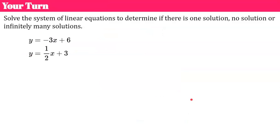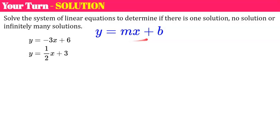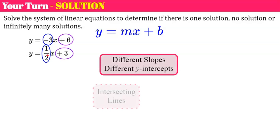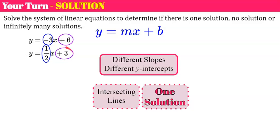Here's another one for you. Go ahead and pause, solve, and come back when you're ready. Welcome back. Both equations are in slope-intercept form. The slopes are different, so automatically we're going to have one solution. These ones also have different y-intercepts, but it doesn't really matter — different slopes means intersecting lines and one solution.